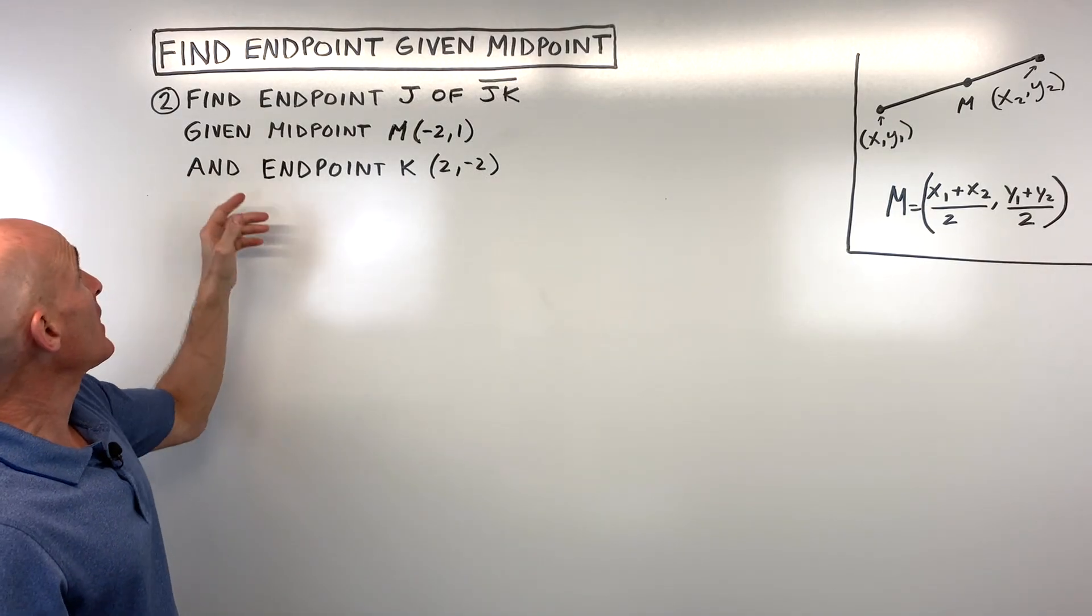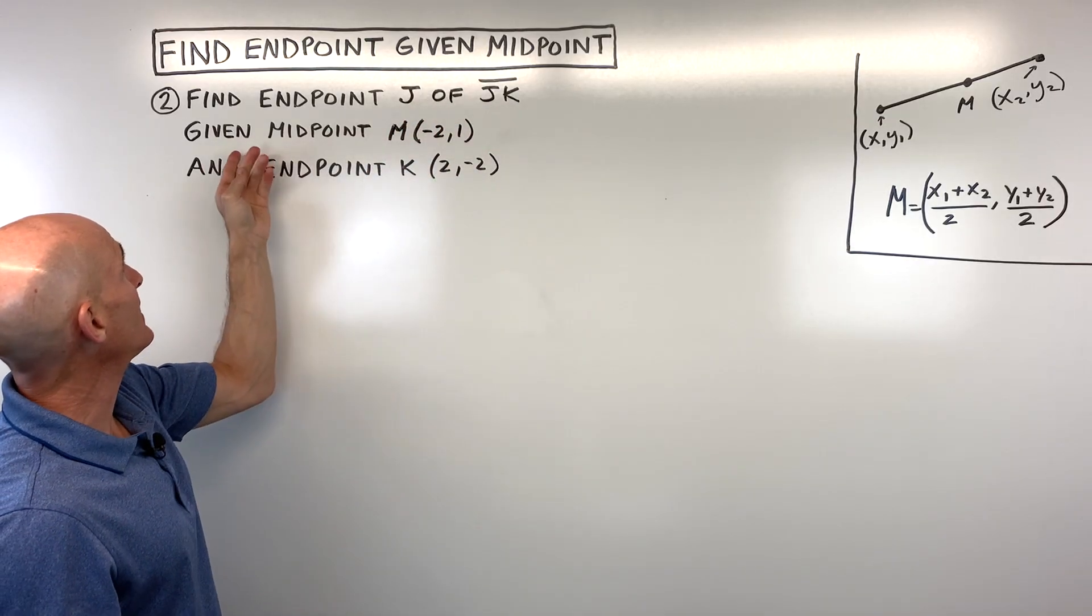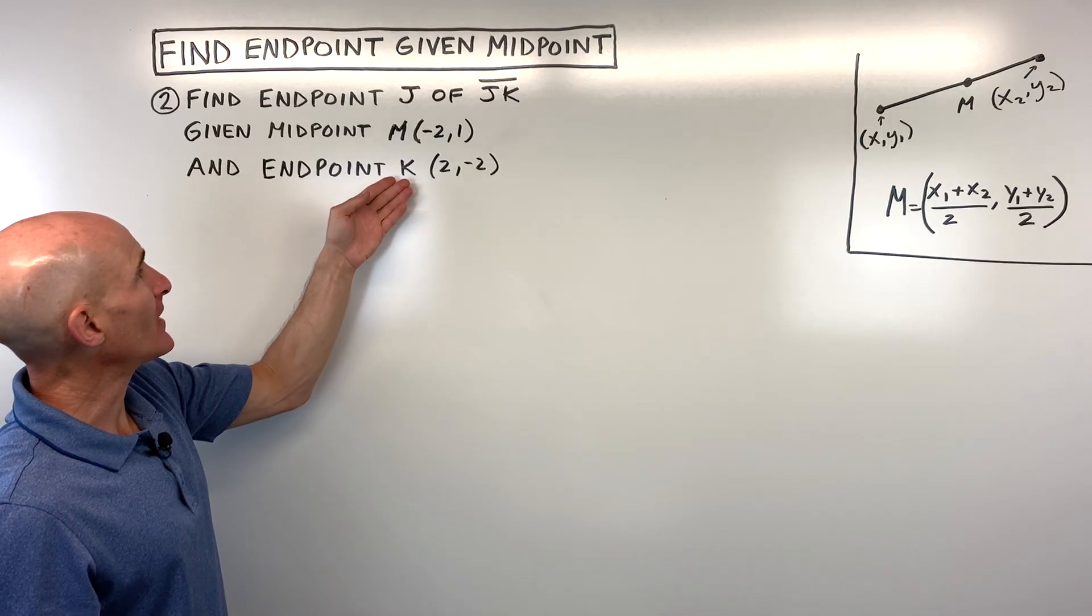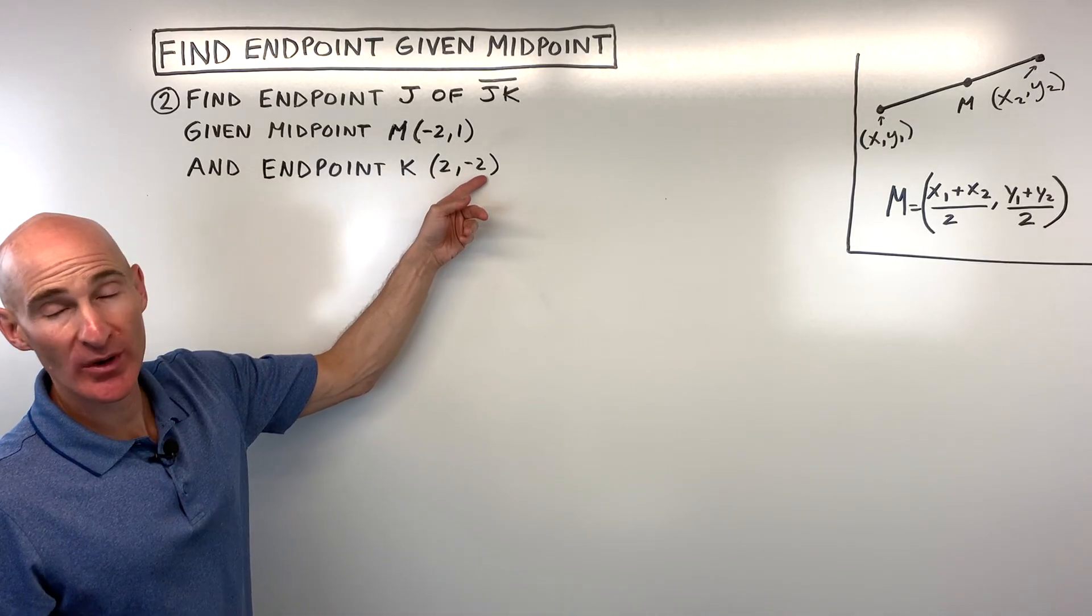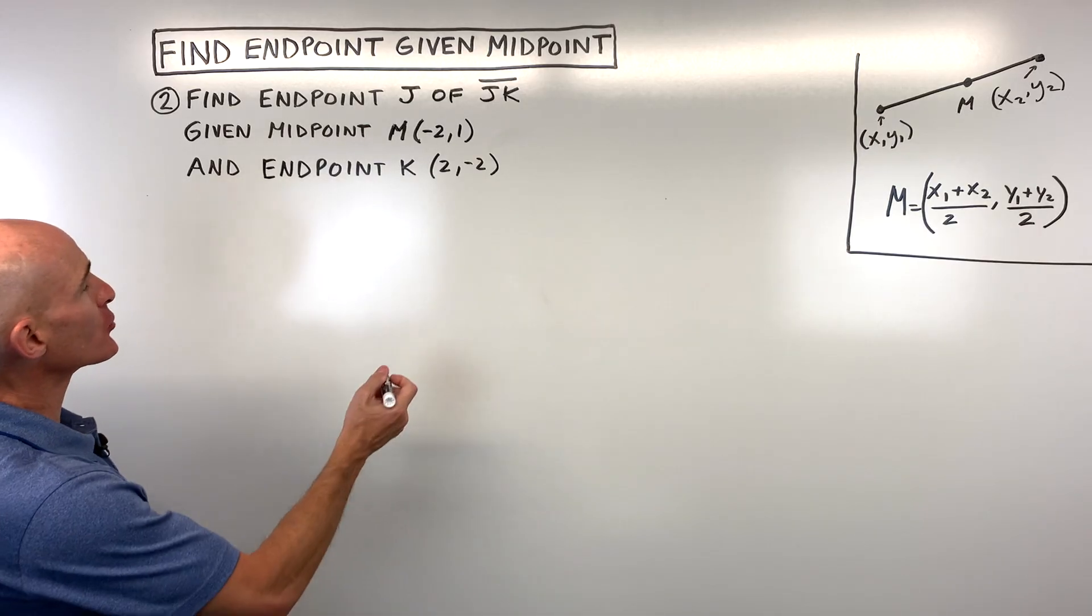For number two, we have find endpoint J of segment JK, given that the midpoint M is at negative two, one, and the other endpoint K is at the point two, negative two. How would you do that one? See if you can pause the video, try this one on your own.